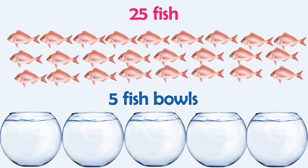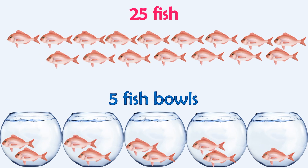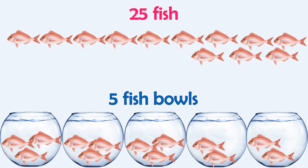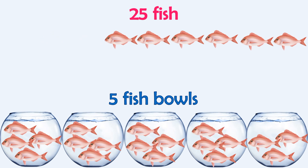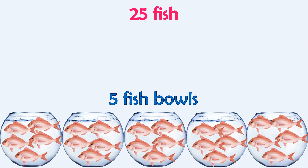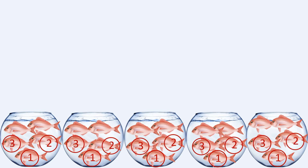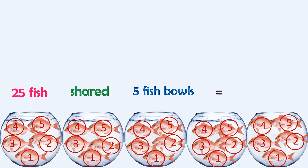Let's start: one, two, three, four, five, six, seven, eight, nine, ten, eleven, twelve, thirteen, fourteen, fifteen, sixteen, seventeen, eighteen, nineteen, twenty, twenty-one, twenty-two, twenty-three, twenty-four, twenty-five. Now let's count how many fish there are in each fish ball: one, two, three, four, five. So twenty-five fish shared equally between five fish balls equals five fish.